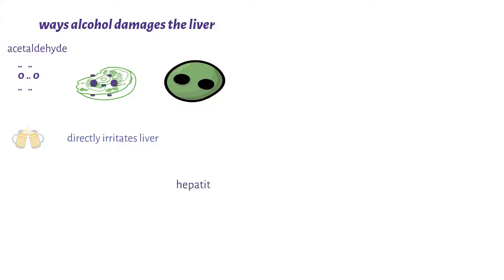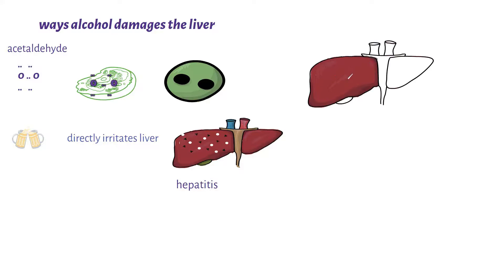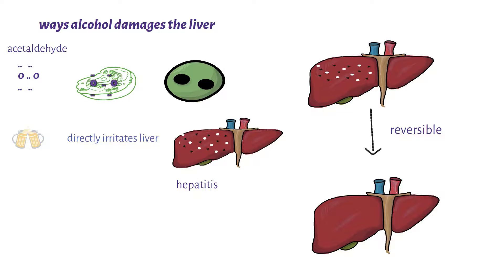The alcohol itself also directly irritates the liver, resulting in hepatitis — hepatitis means that there is inflammation of the liver, so the liver becomes inflamed. The good news is that alcoholic hepatitis is reversible once you stop taking the alcohol, so the inflammation may go down and everything may go back to normal.